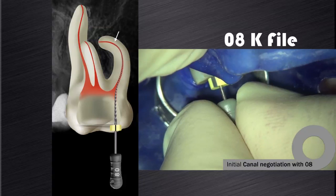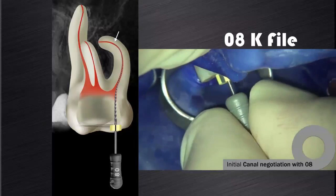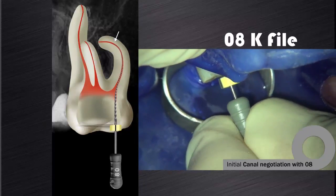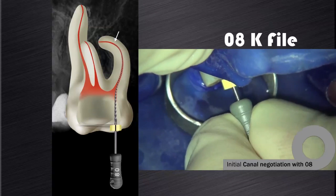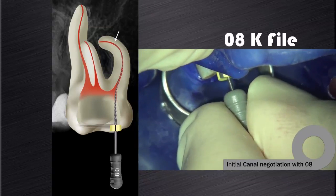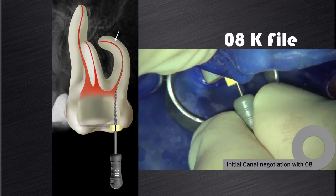We started canal negotiation with an 08 K-file, and the file hung up in the apical third at the point of maximum root canal curvature.